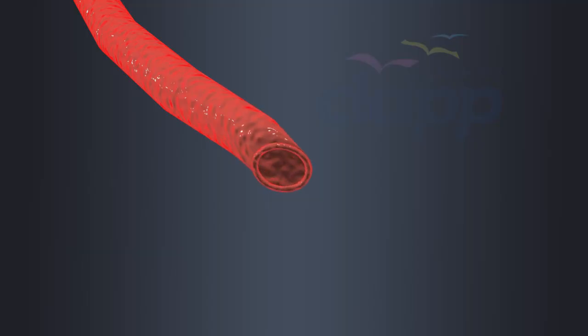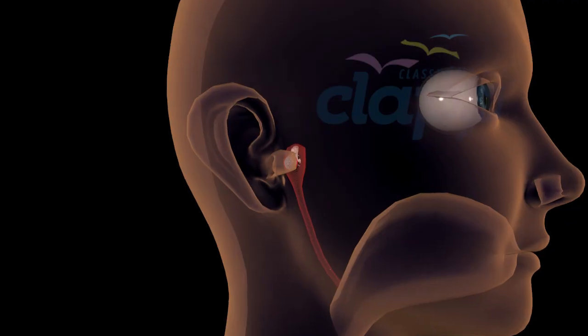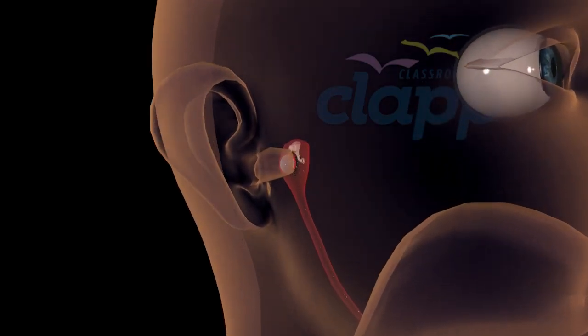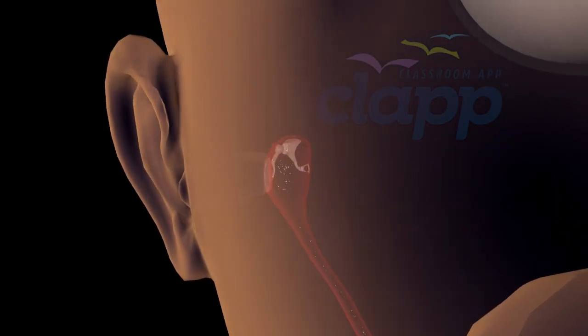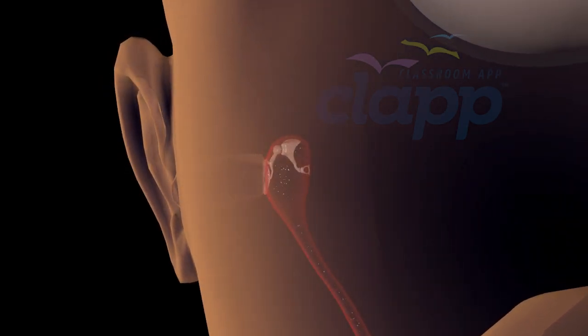The eustachian tube opens and allows air to flow in or out of the middle ear, equalizing the pressure on both sides of the eardrum. This process helps for normal hearing and prevents discomfort and protects the delicate structures of the middle ear.